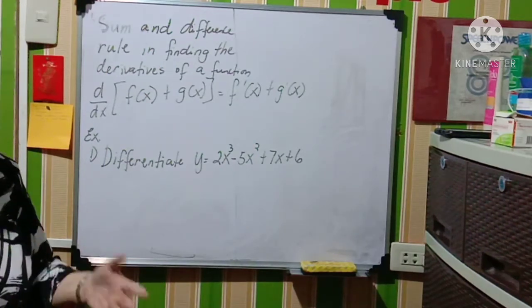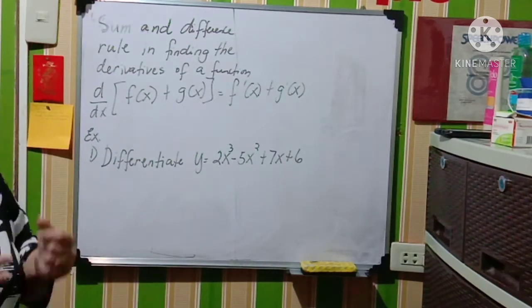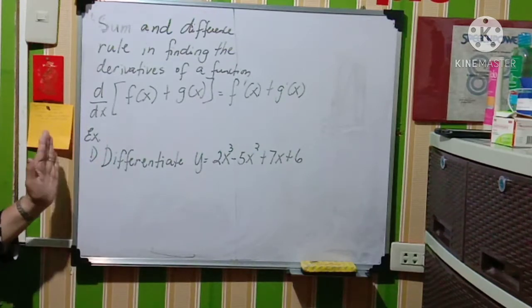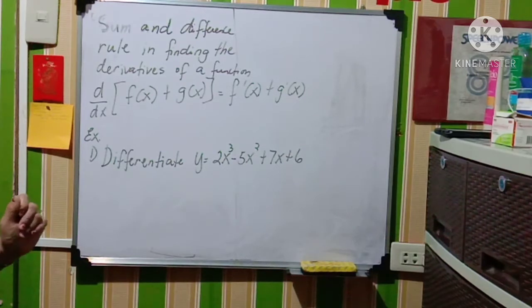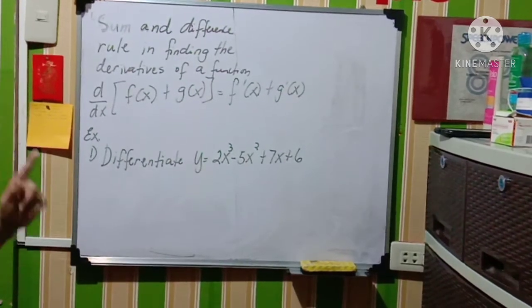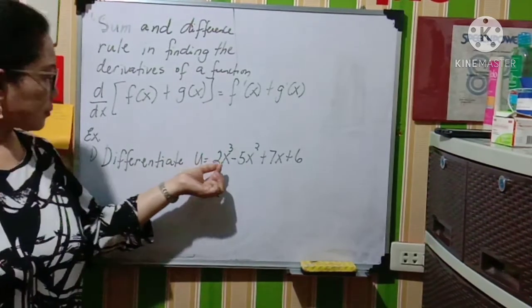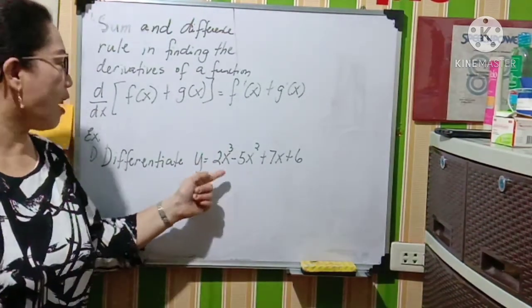So we will be using the definition in getting the derivative of this equation. Differentiate y is equal to 2x cube minus 5x squared plus 7x plus 6. How many terms are there? So there are four terms: 1, 2, 3, and 4.